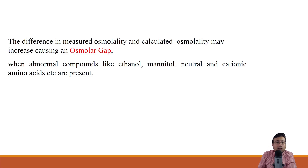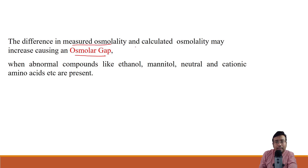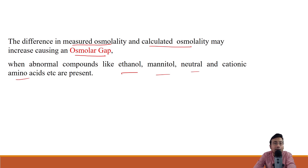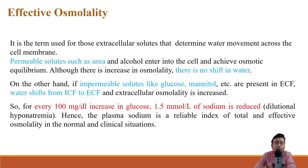Osmolar gap is the difference between measured osmolality and calculated osmolality — the unmeasured osmolality portion. It occurs due to compounds like ethanol, mannitol, neutral compounds, and various cationic amino acids. This is similar to anion gap in the pH and buffer chapter, where unmeasured anions like albumin and protein contribute. Osmolar gap acts similarly, due to these unmeasured compounds that contribute minor amounts to overall plasma osmolality.